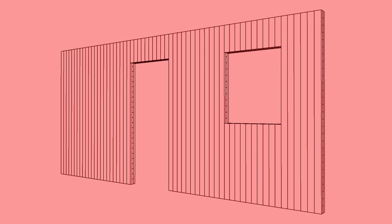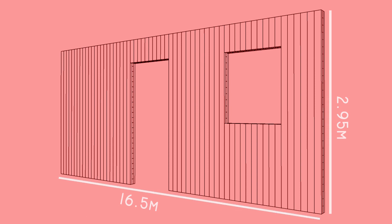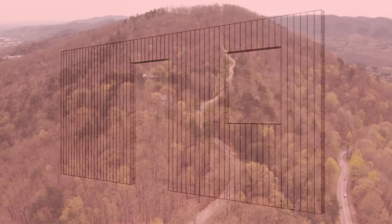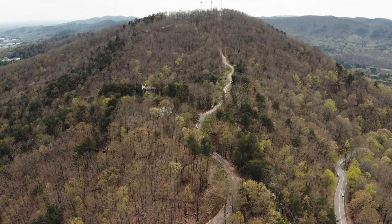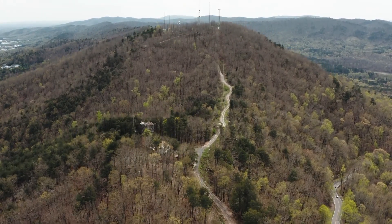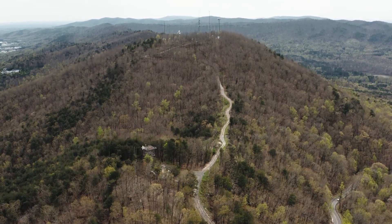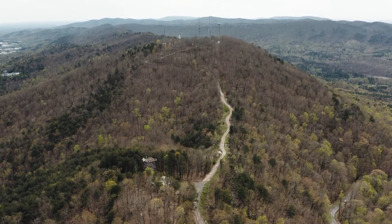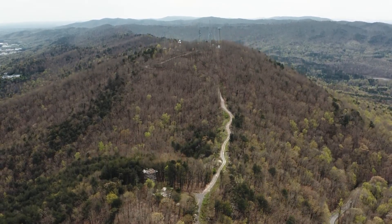All manufacturers are different and have different capabilities when it comes to producing large panels. KLH currently has a maximum size of 16.5m by almost 3m. When designing for CLT, access routes need to be thought about. It's pointless creating a huge panel if the road leading to your site cannot take the delivery vehicle.